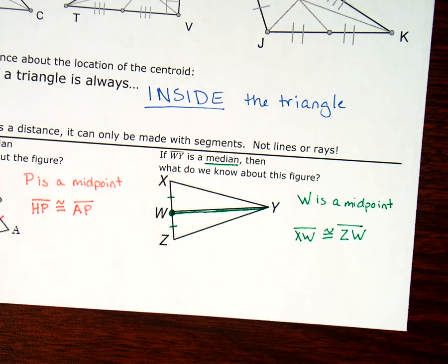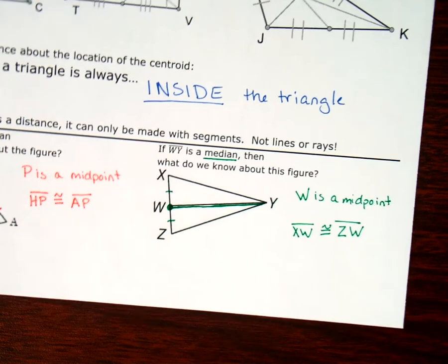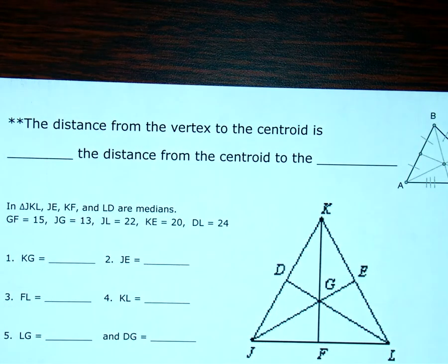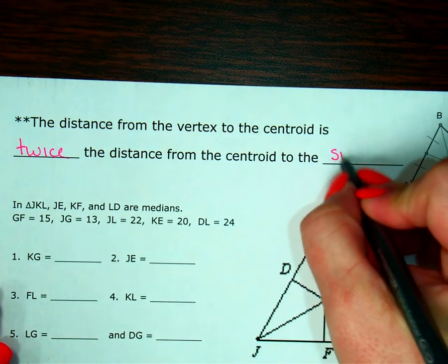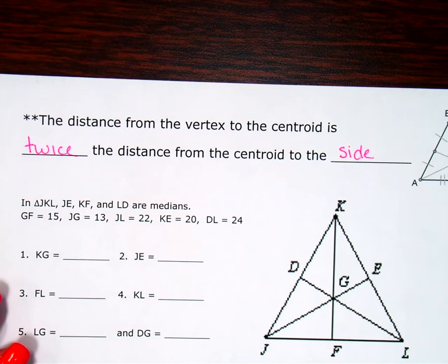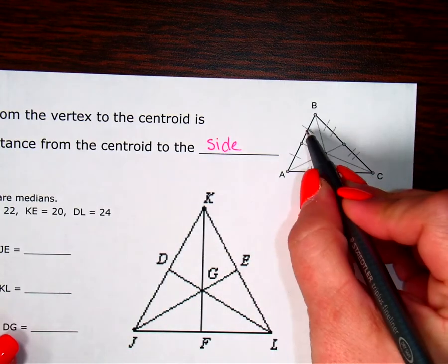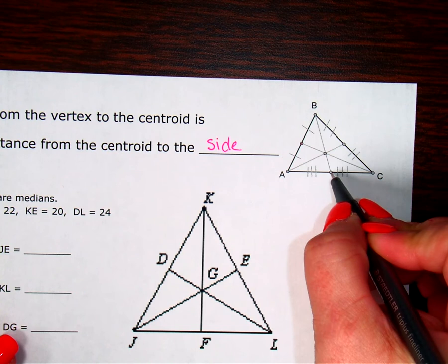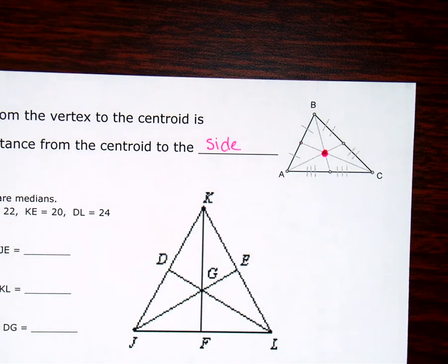We're going to real quick learn a fun fact about the centroid and the distance of what the centroid does to the length of the median. Here's my next fun little fact about the centroid. The distance from the vertex to the centroid is twice the distance from the centroid to the side. What that means is, notice I've got midpoints because these are the same. So, this is a midpoint. These two are the same, so midpoint. These two are the same, so midpoint. So, this is a centroid.